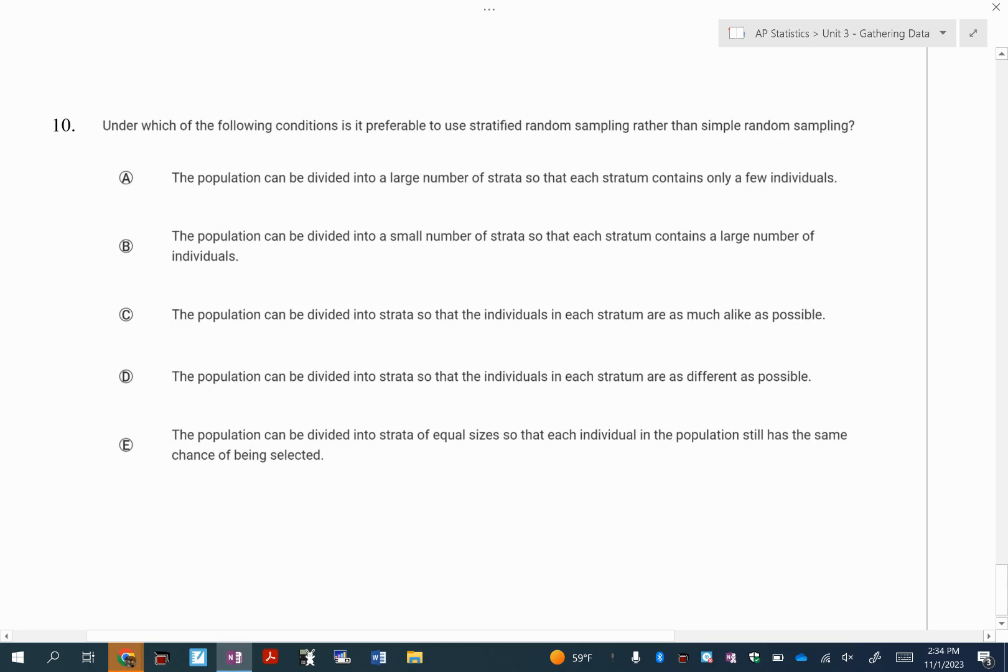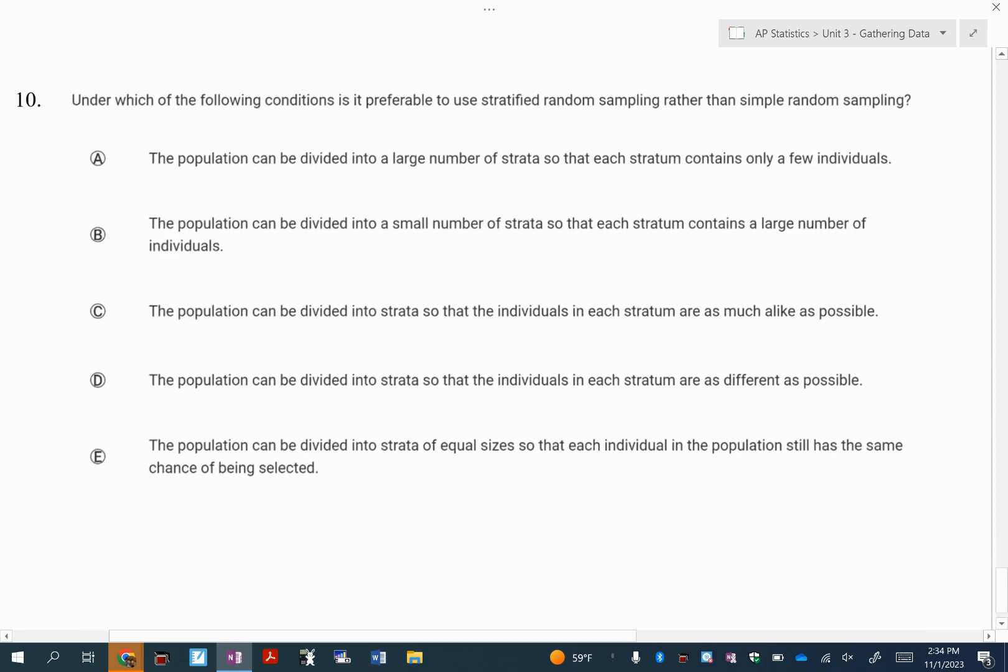Okay, the last one. Preferable to use stratified sampling. So the idea, kind of similar to what I said about blocking, when you do stratified sampling, you're hoping to separate your groups into homogeneous groups. It has nothing to do with size. So I know a couple of these talk about if you have a large or small amount. No, it's all about can you separate them into strata or groups that are homogeneous or alike in some way.